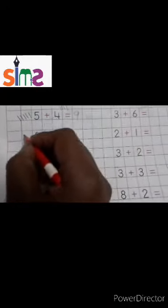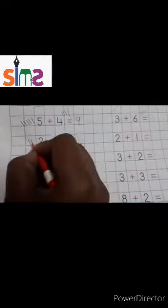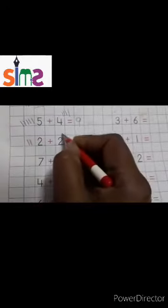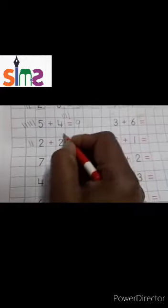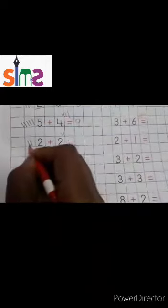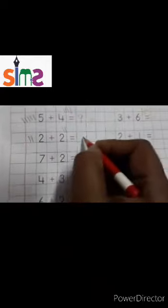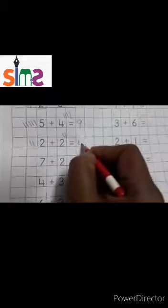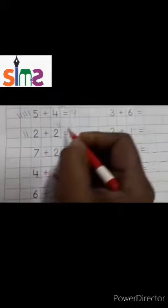Next set. Two: one, two. Two: one, two. Count all: one, two, three, four. So two plus two is equal to four.